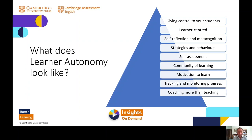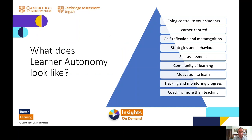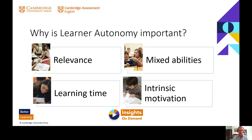In an autonomous learning classroom, there's often a lot of work tracking and monitoring progress because people are on different pathways, and sometimes the teaching style becomes much closer to coaching than to instructing. These are the typical characteristics of a classroom where learner autonomy is strong.